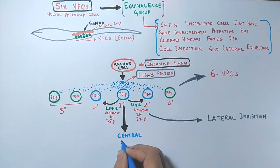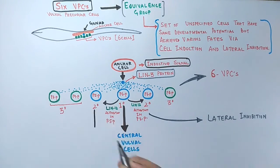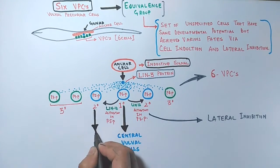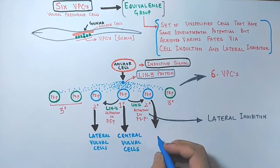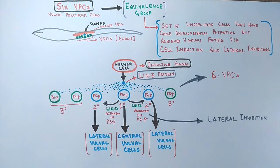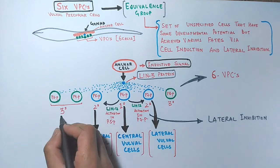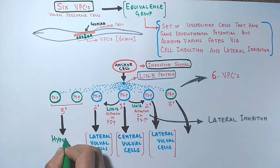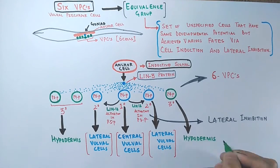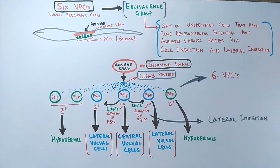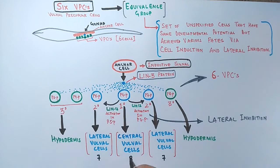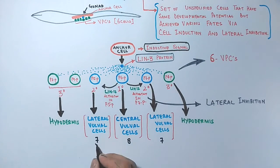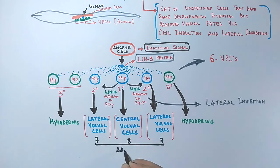After signaling, the P6.p cell — the 1° precursor cell — divides into central vulva cells, while the 2° VPCs divide into lateral vulva cells. The 3° cells, which received no inductive or lateral signal, divide into hypodermis. There are eight central cells and fourteen lateral cells, giving a total of 22 vulva cells.